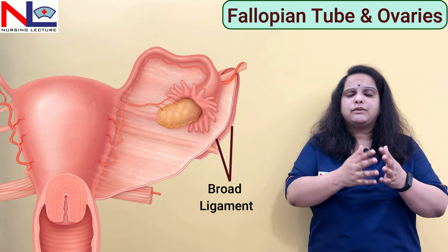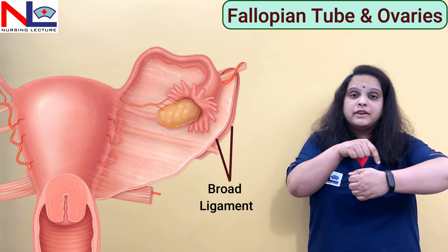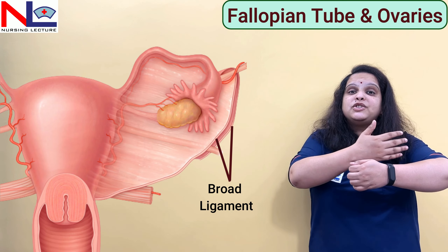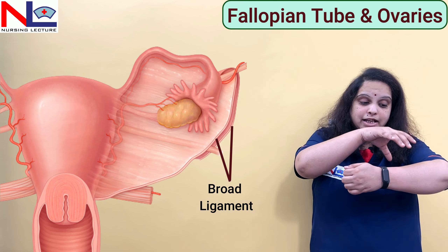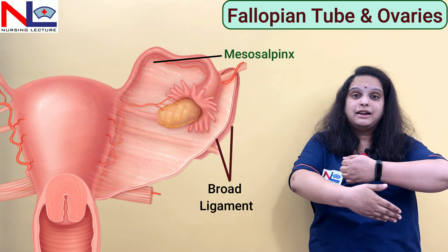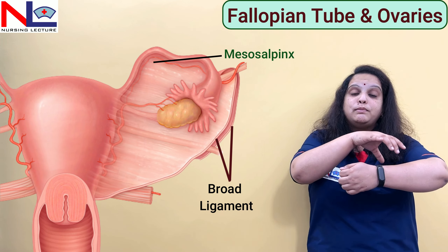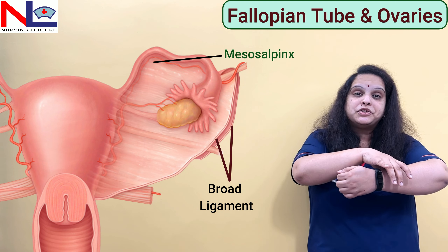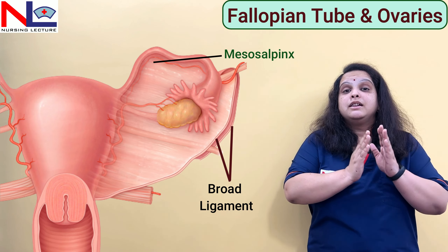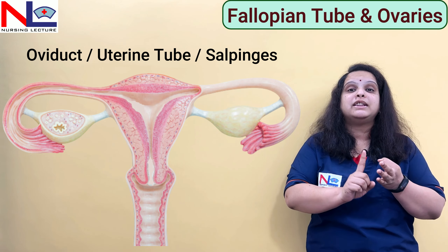We already discussed what the broad ligament is — it is the double fold of peritoneum. The fallopian tube lies within this free margin of the broad ligament, within this double fold of peritoneum. The fallopian tube is also called the oviduct, uterine tube, or the salpinx.